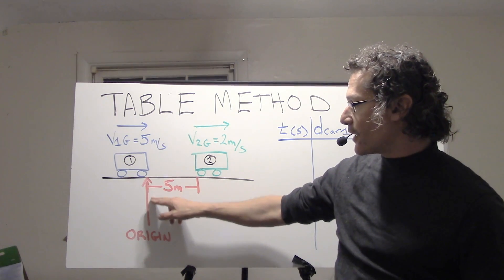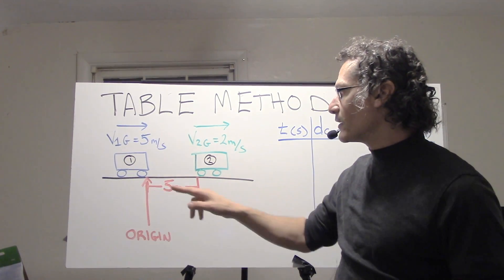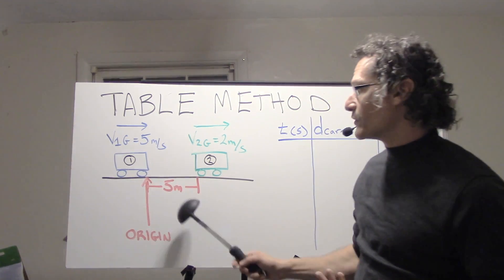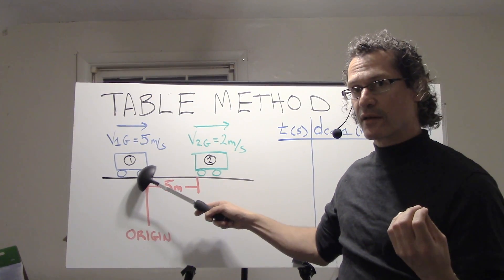What I've chosen is this location over here. My zero is going to be right here, and I really could have chosen anywhere, but I thought this was a good spot, right where car one is going to begin.